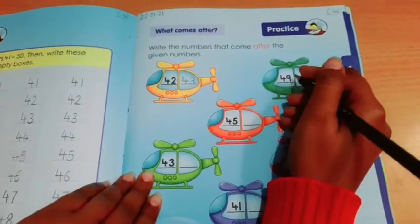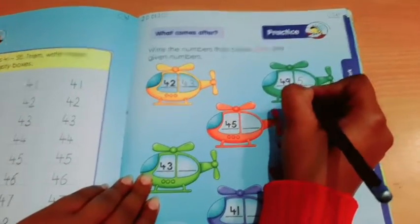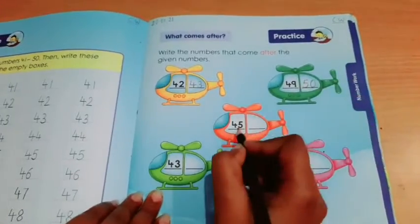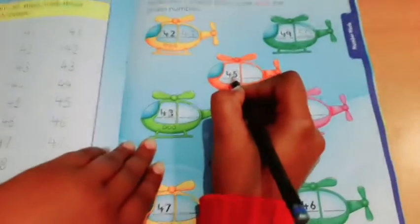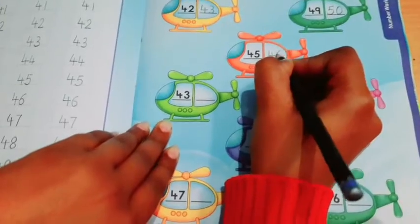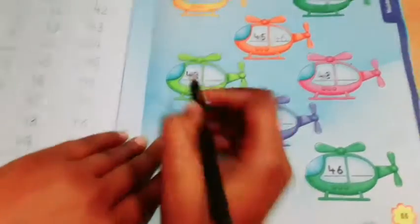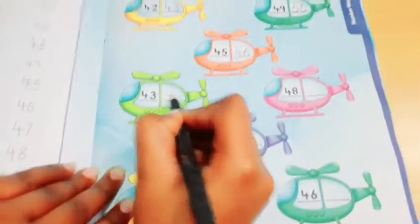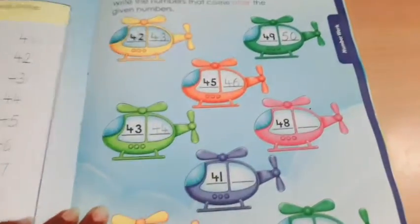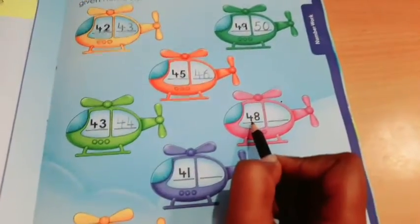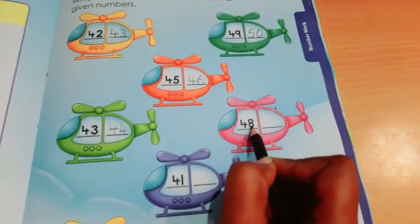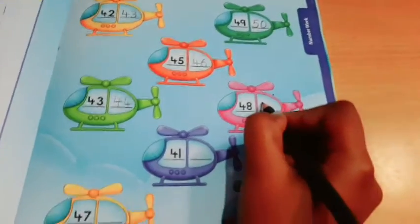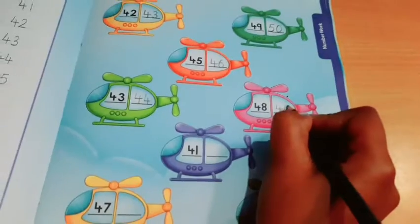49, so we will write 50. Here the number is 45, so we will write 46. Now 43, which number comes after 43? 44. Now the next number is 48, and we will write 49.